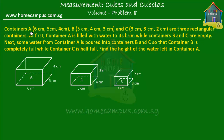It says that container A is 6 cm by 5 cm by 4 cm. Here's the container — the length is 6 cm, the breadth is 5 cm, and the height is 4 cm. The figures in the brackets give you the dimensions of the containers.